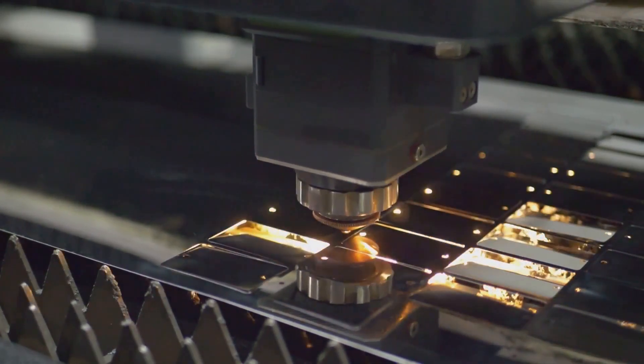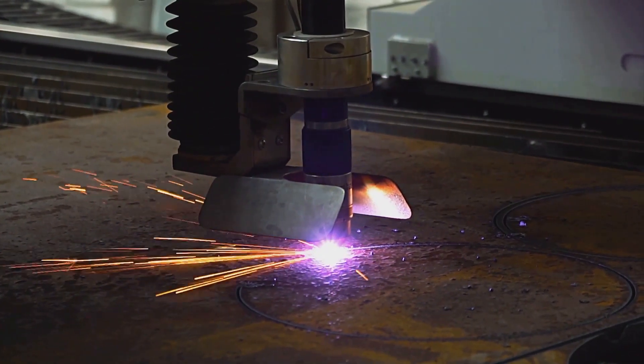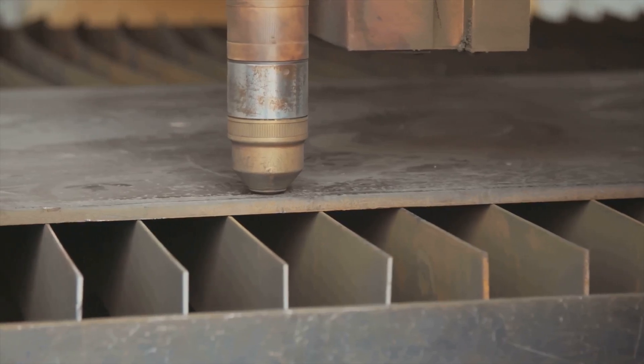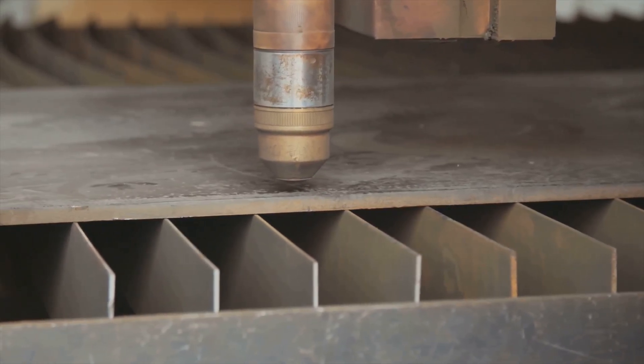First up, let's address speed and precision. Plasma cutters use ionized gas at high velocity to slice through metal. It's fast, but you'll notice distortion and a wider kerf - the width of the cut.